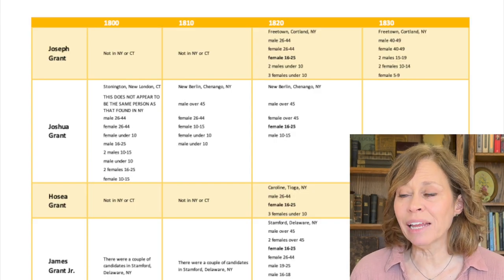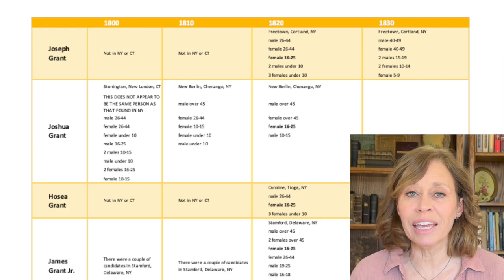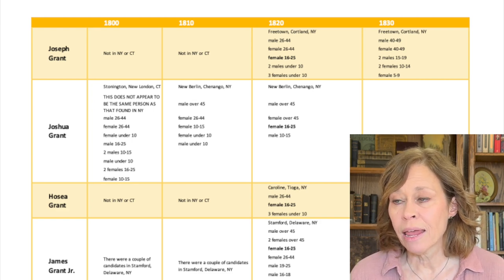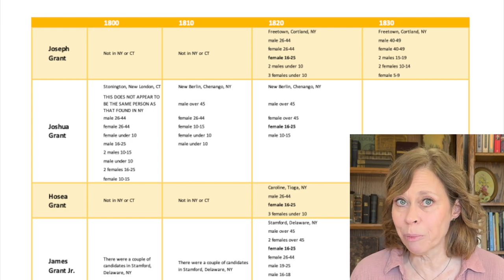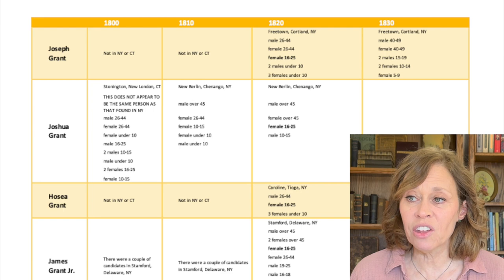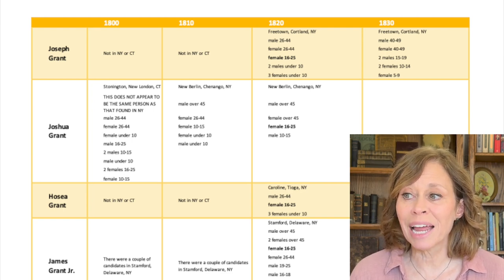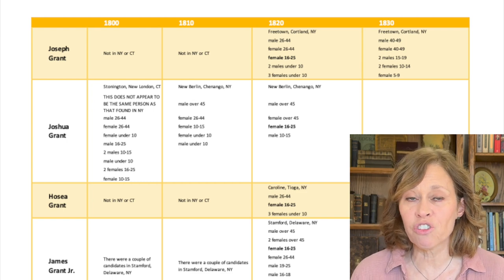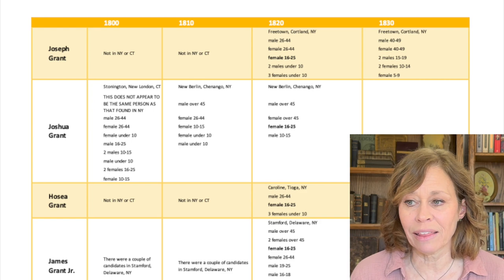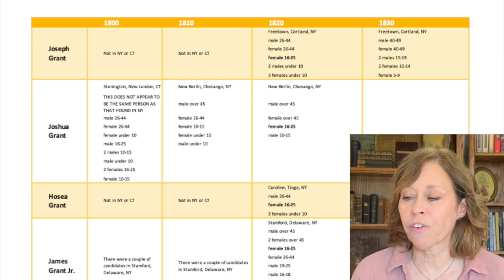Now this is a similar timeline in that it's all pre-1850, but in this instance I'm looking at various individuals with the surname of Grant, and I'm trying to see who lived in a particular area and track them to see if they moved around. Here you can see the different county that they lived in and the family members. So it helps me identify whether or not I'm really tracking the right family, and whether there was another Joshua Grant that lived in the area or something like that.